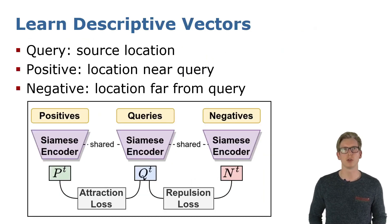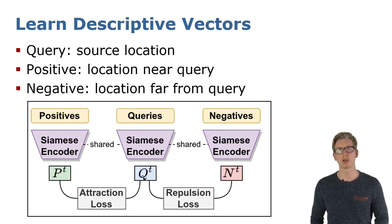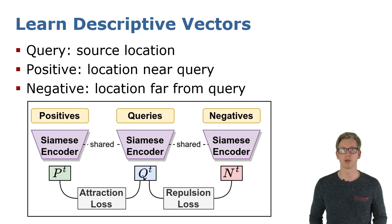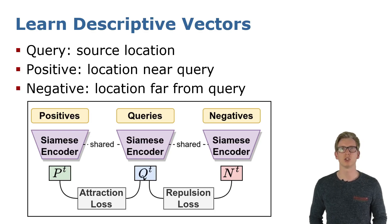To learn meaningful and descriptive features from the point clouds, one usually uses contrastive learning. First, we compute the descriptor from the query location. Second, we compute the descriptor from a close-by location, the so-called positive. We want the descriptor from the query and from the positive to be very similar, so we use an attraction loss which pulls the vectors together. We also compute a descriptor from a different location, the so-called negative, which we want to be dissimilar from the query, using a repulsion loss that pushes the descriptors apart.